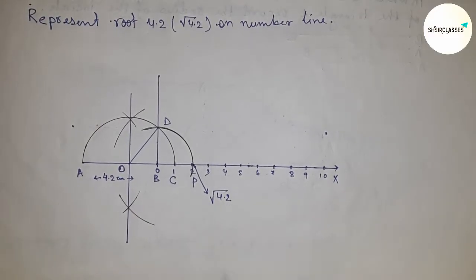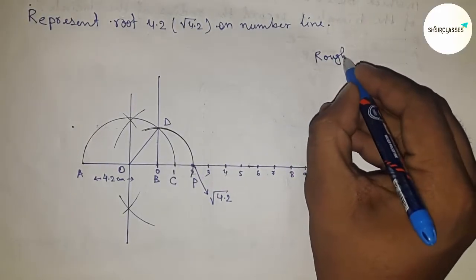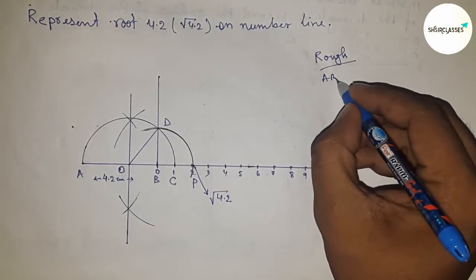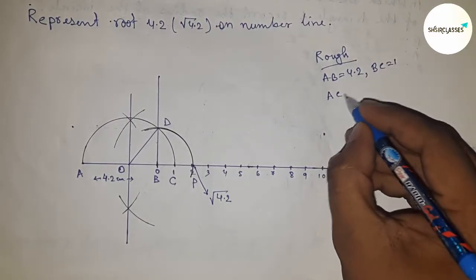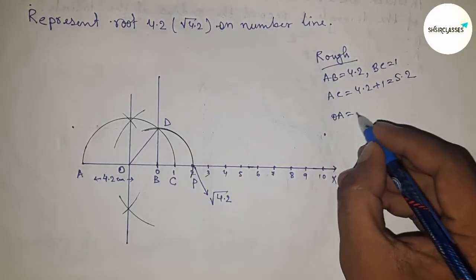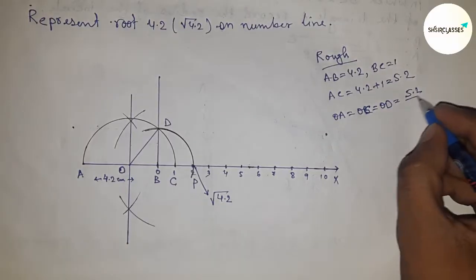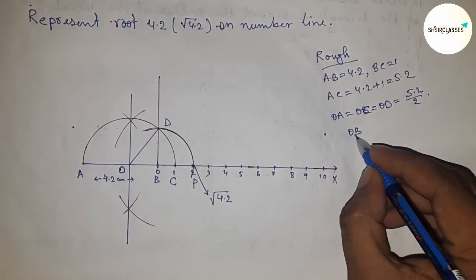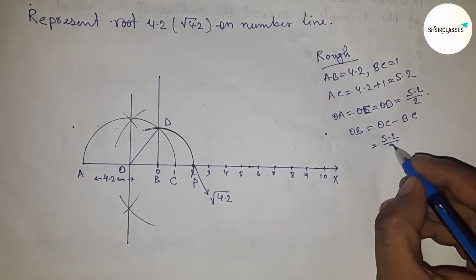Now let's discuss the calculation of root 4.2. Given AB equals 4.2 and BC equals 1, so AC equals 4.2 plus 1 equals 5.2. The radius of the semicircle OA, OC, and OD equals 5.2 by 2. Now OB equals OC minus BC, so putting the value we get 3.2 by 2.